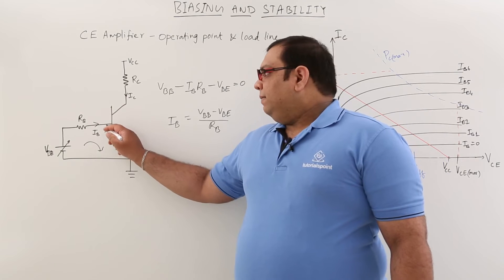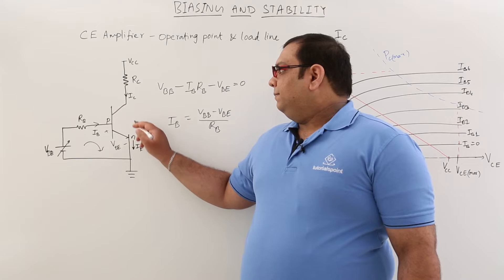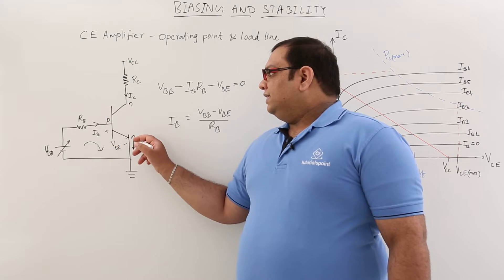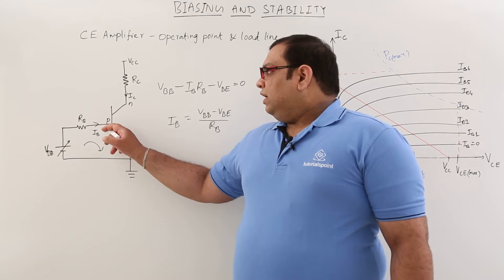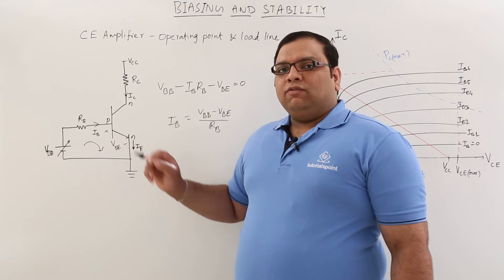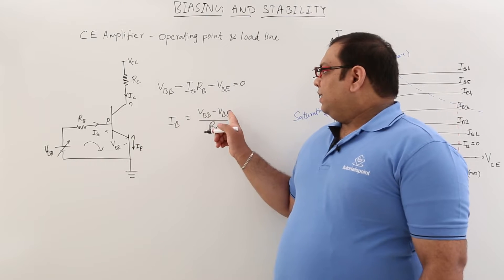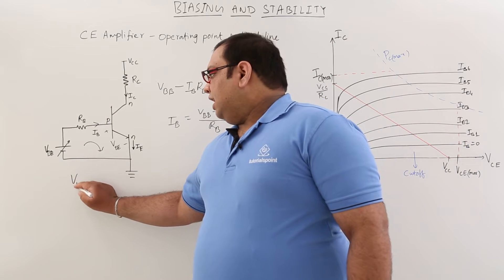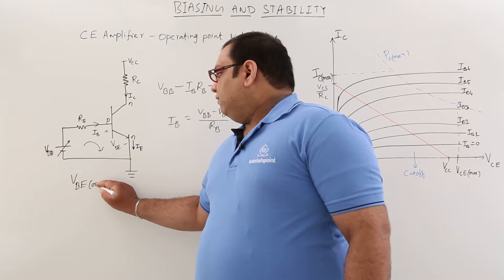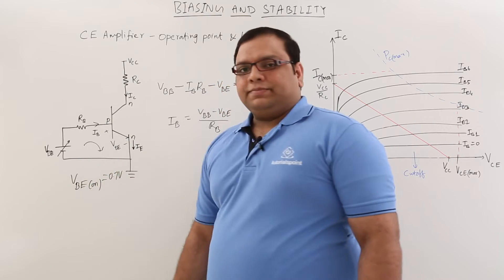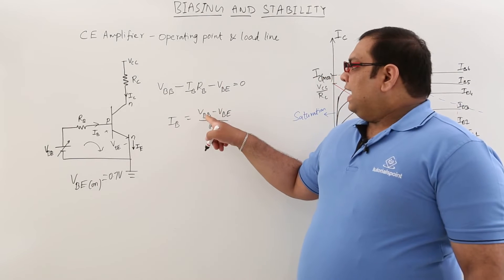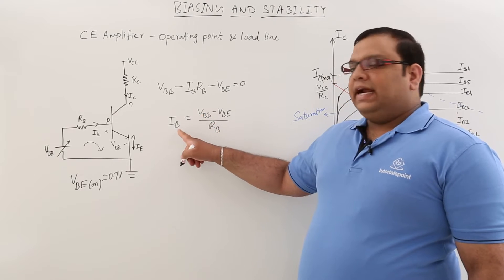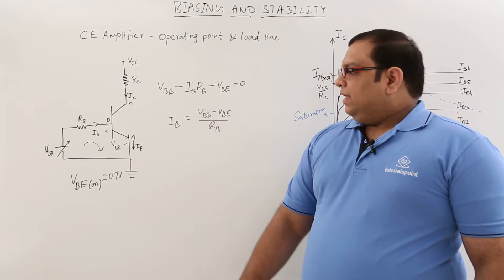Observe the transistor symbol carefully. The arrow direction indicates P-type semiconductor on the base side — this is an NPN transistor. The P-N junction must be forward biased, and when forward biased, the voltage across a PN junction diode is always 0.7V. So VBE(on) equals 0.7 volts. VBB is variable and RB is constant, so by changing VBB we get different values of IB.